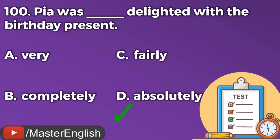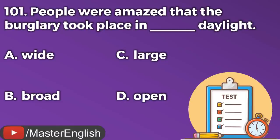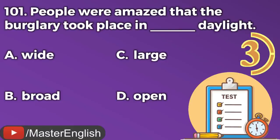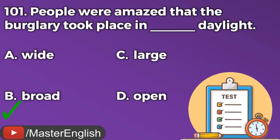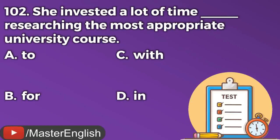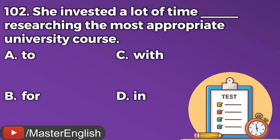Question number one hundred and one. People were amazed that the burglary took place in ___ daylight. A: Wide. B: Broad. C: Large. D: Open. The correct answer is B: Broad. The burglary took place in broad daylight. Question number one hundred and two. She invested a lot of time ___ researching the most appropriate university course. A: To. B: For. C: With. D: In. The correct answer is D: In. She invested a lot of time in researching the most appropriate university course.